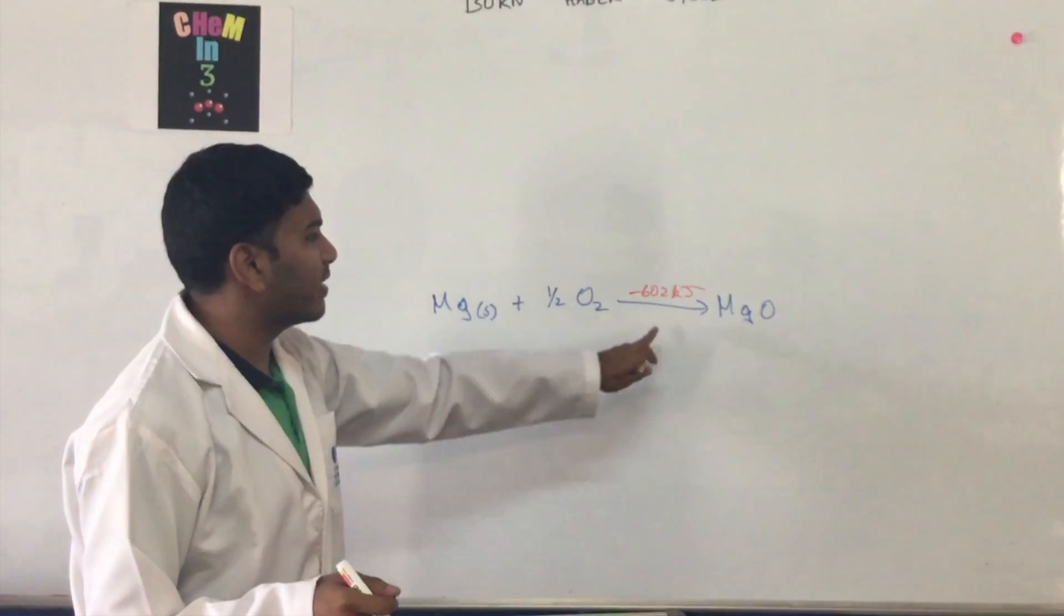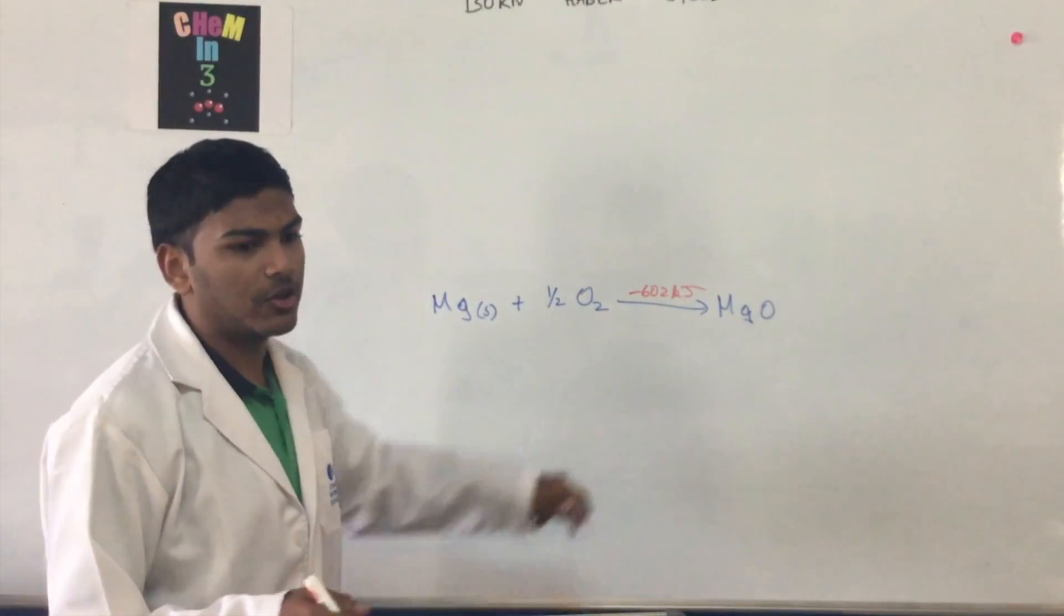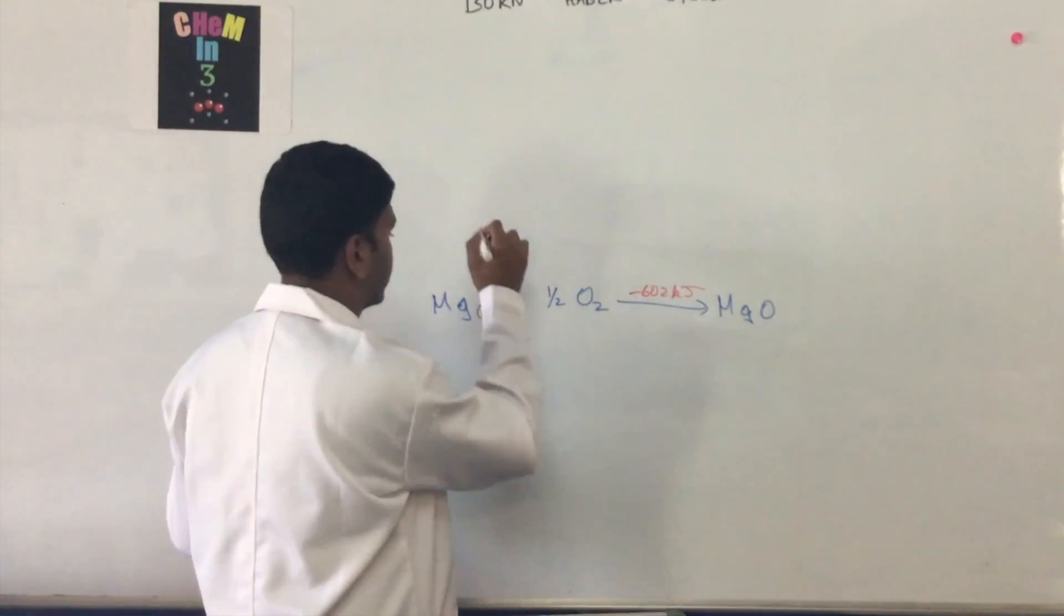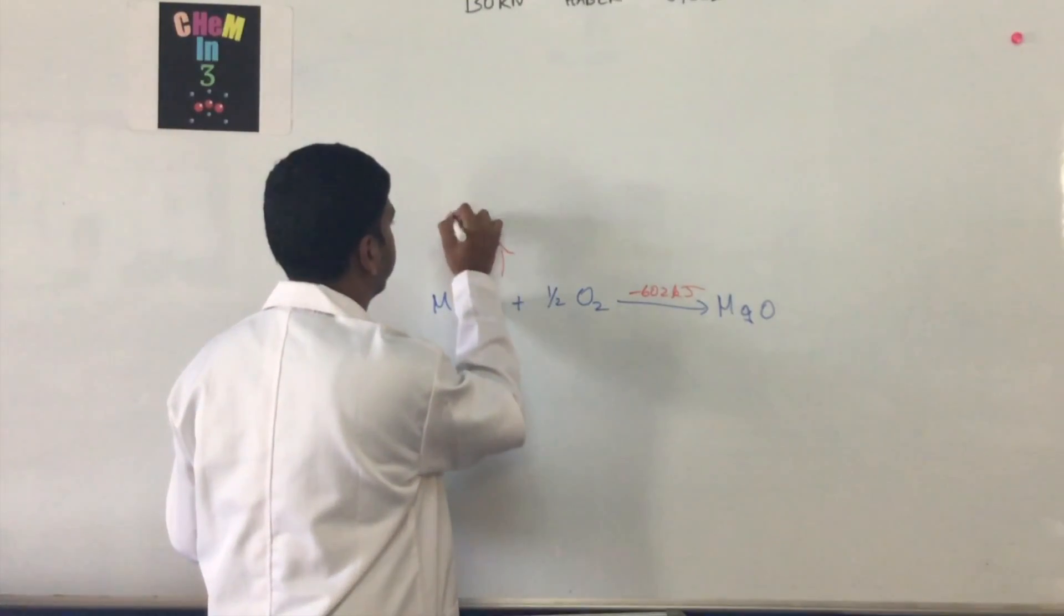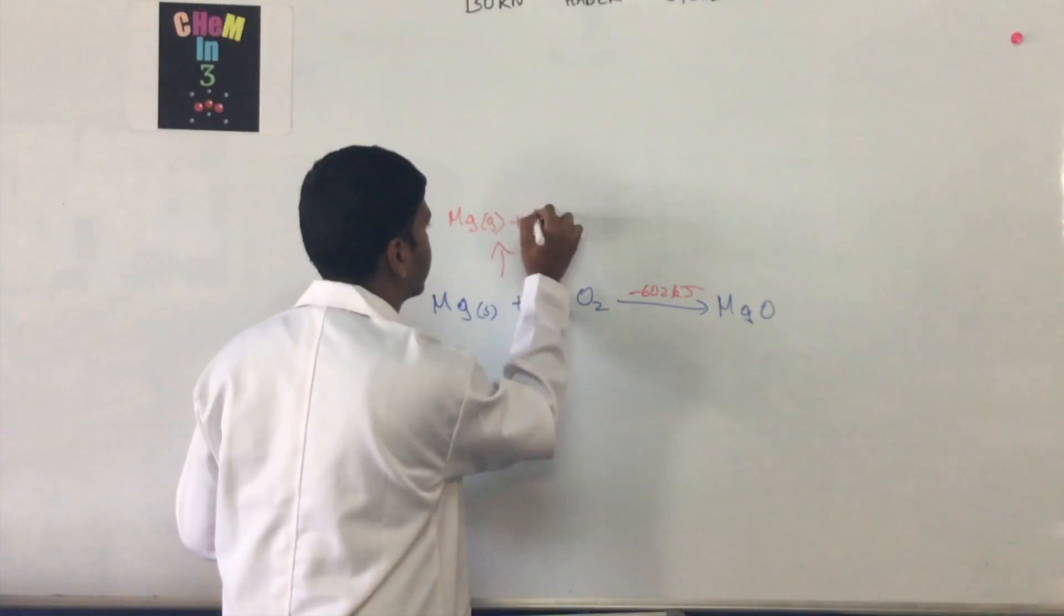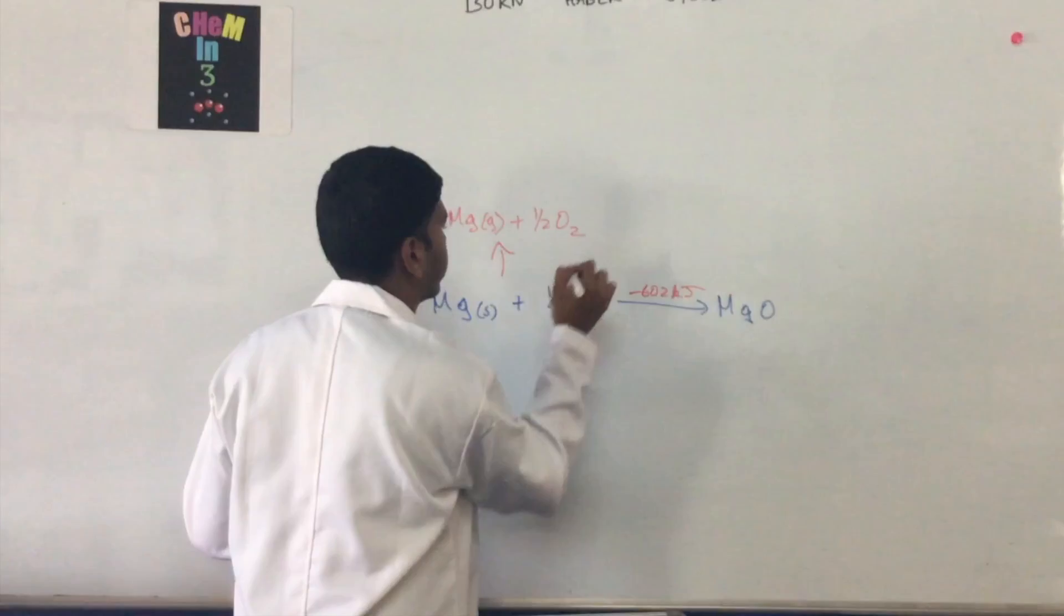So we go around another cycle that ends up at this value. First, magnesium goes from its solid state to its gaseous state, Mg(g), and oxygen remains the same for now, O2.